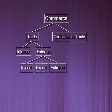External trade can be divided into three ways: first is import, second is export, and third is entrepot. When we buy goods from another nation, that is called import. When we sell goods to another country, it is called export. Entrepot is a combination of import and export.